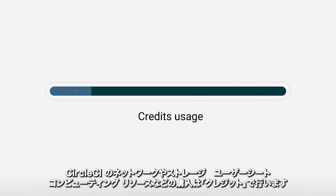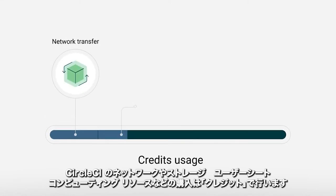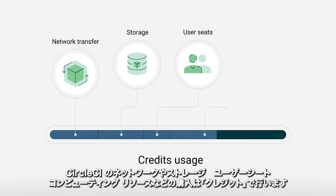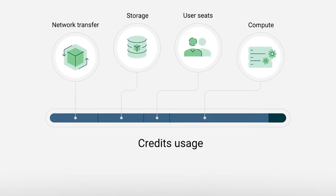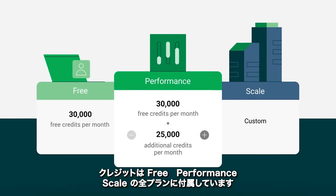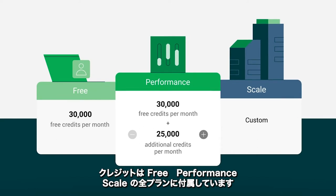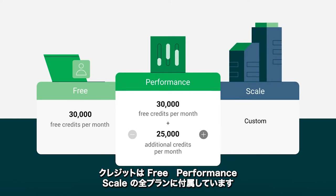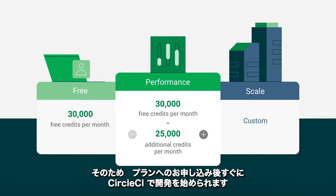At CircleCI, credits are exchanged for items like network and storage, user seats, and compute within the platform. Each of our plans — free, performance, and scale — come with a package of credits included, which your team can use to immediately get work done using CircleCI.